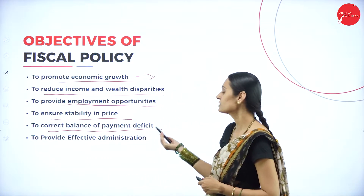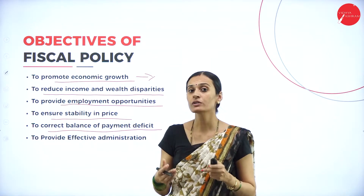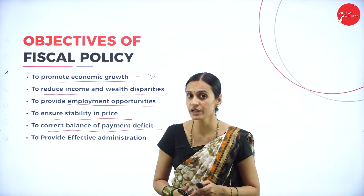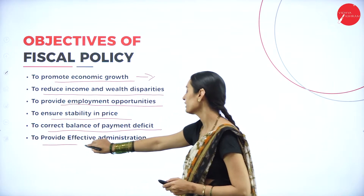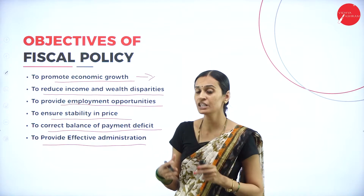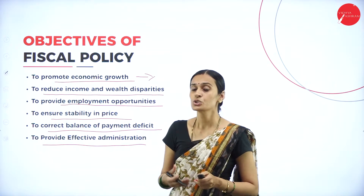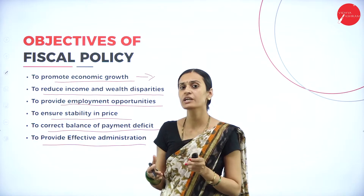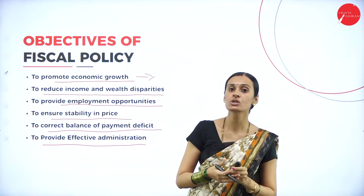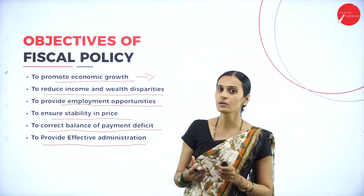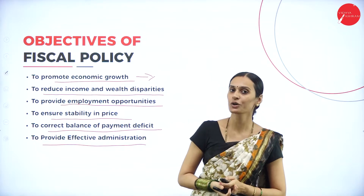The fifth objective is to correct balance of payments deficits — by increasing exports, providing subsidies, and producing import substitution products which can create balance of payments equilibrium. The sixth objective is to provide effective administration. Expenditure on police, defense, education, legislature, and judiciary are important sectors which secure the economic system and political conditions of the country. That is why fiscal policy is one of the important instruments that helps the smooth functioning of the economic system.